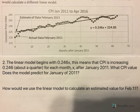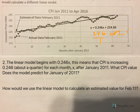The linear model begins with 0.246x. This means that CPI is increasing 0.246 — which is about a quarter — for each month x after January 2011. If we put 0.246 over 1, the top represents the CPI because that's the y-axis, and the bottom represents the months after January 2011 because that's the x-axis. That's where that comes from.